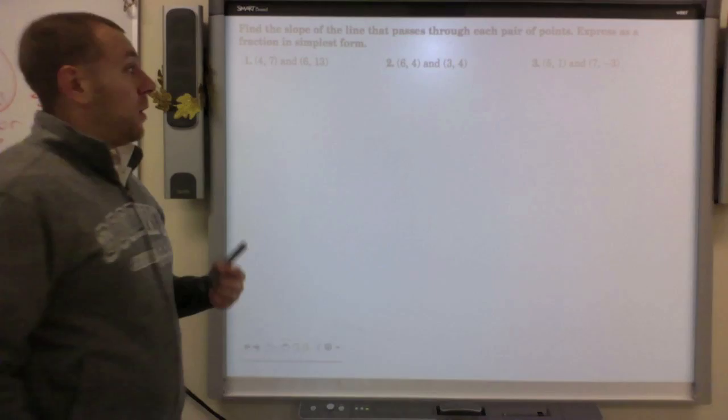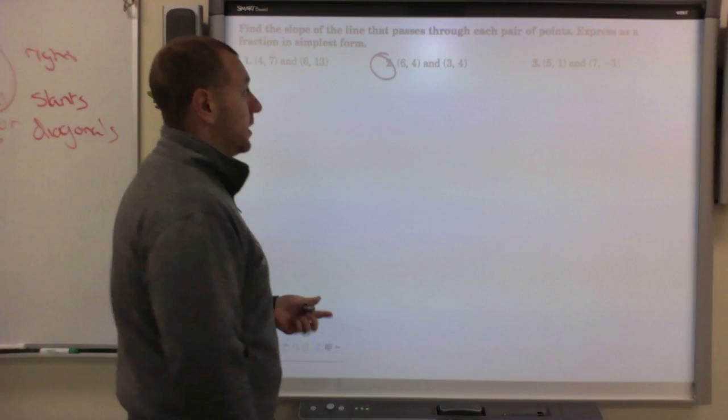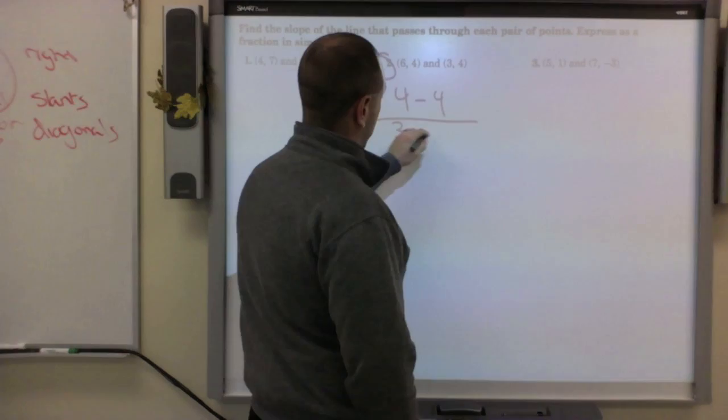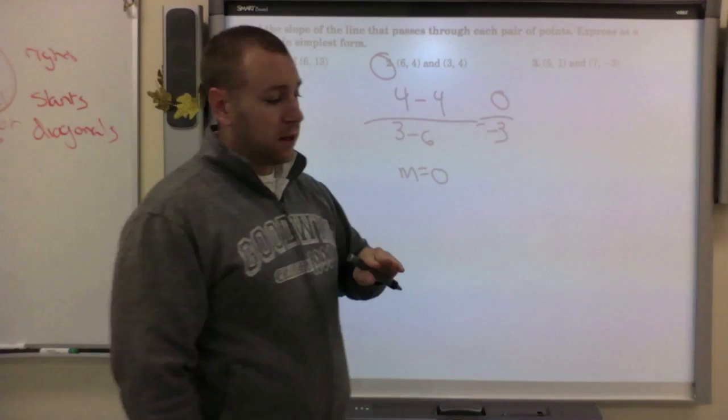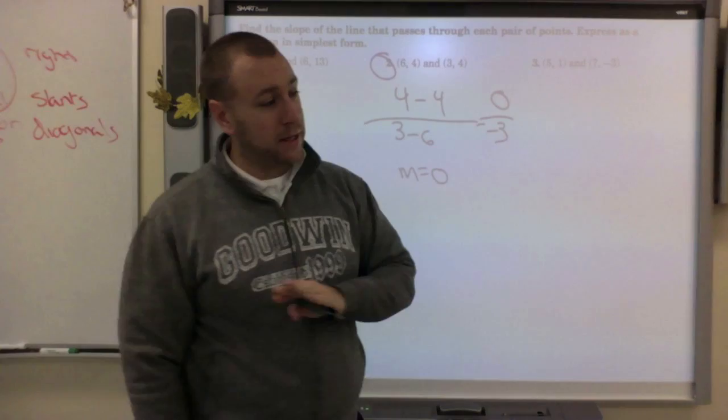For this second one here, if I plug this in I got 4 minus 4 over 3 minus 6, that's 0 over negative 3. The slope of that is zero. Anytime you have a slope of zero, think of it as like a flat piece of land or a floor. That slope is zero because it's not rising whatsoever. That is what we call a horizontal line.